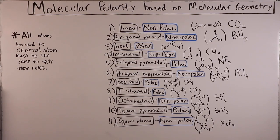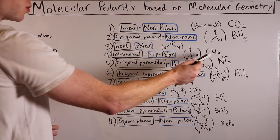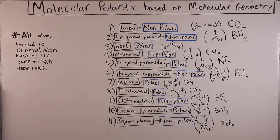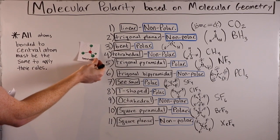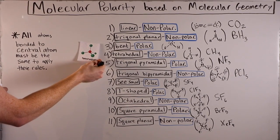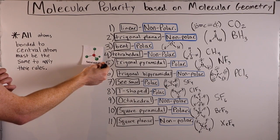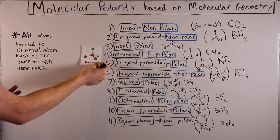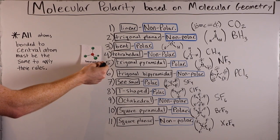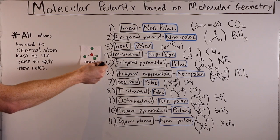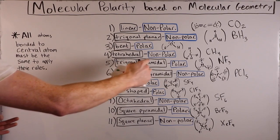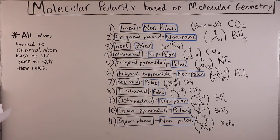Tetrahedral is the next shape, with CH₄ (methane) as an example. In three-dimensional space, if four horses were pulling on the central post, they all geometrically cancel each other out. So even though C–H bonds are polar covalent bonds, the dipole moments cancel and the overall molecule is nonpolar.